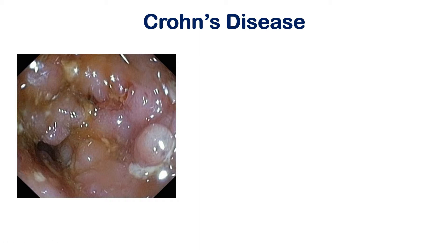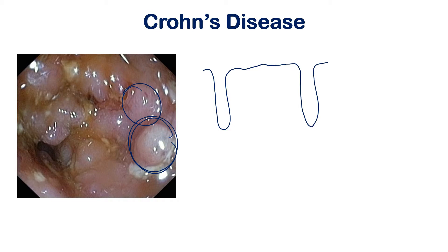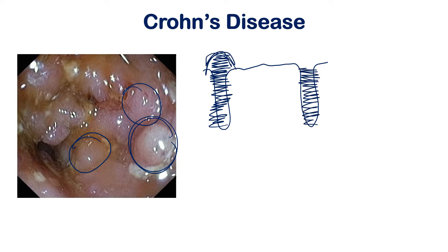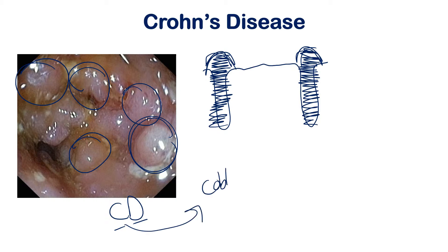Another important feature is cobblestone lesions. When an area is affected by knife-like transmural inflammation going through all four layers, the surrounding tissue puffs up as scar tissue — fibroblasts and myofibroblasts put in collagen and scar tissue, creating little bubbles on the surface. This is called cobblestone mucosa. A memory trick: the 'C' in Crohn's stands for cobblestone.